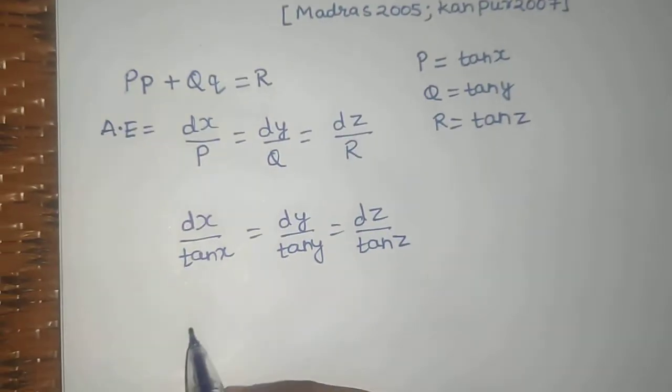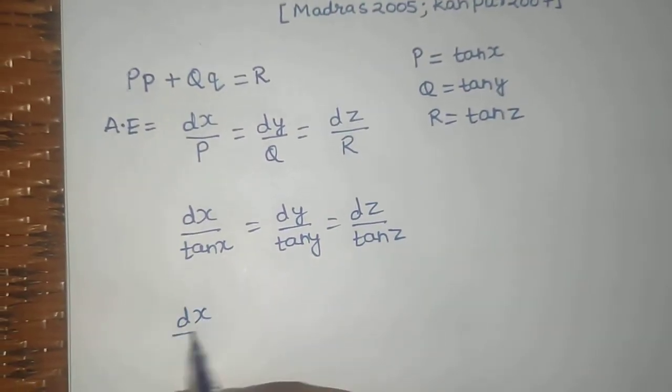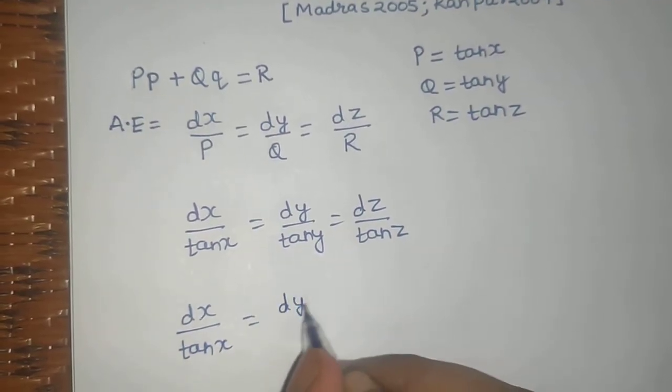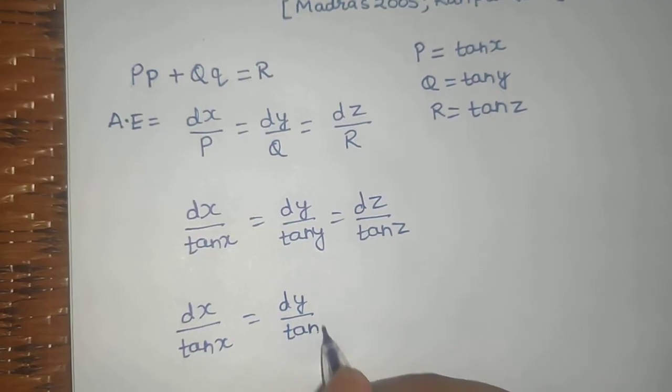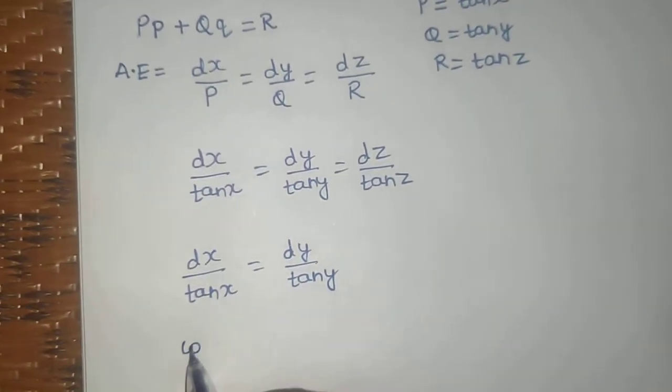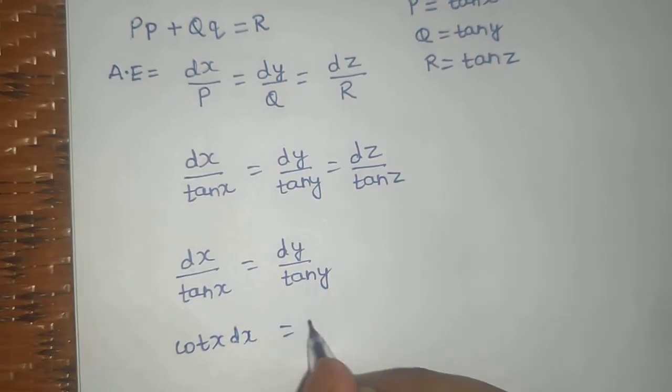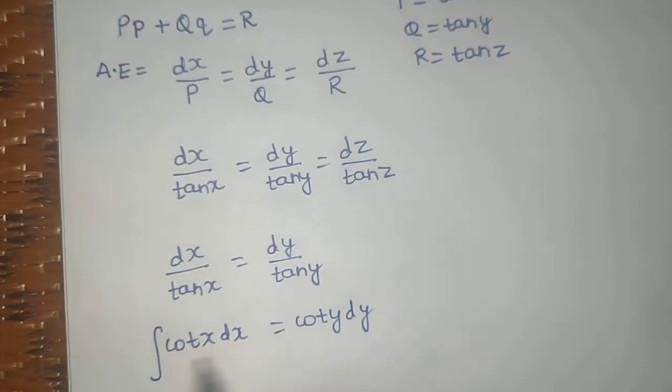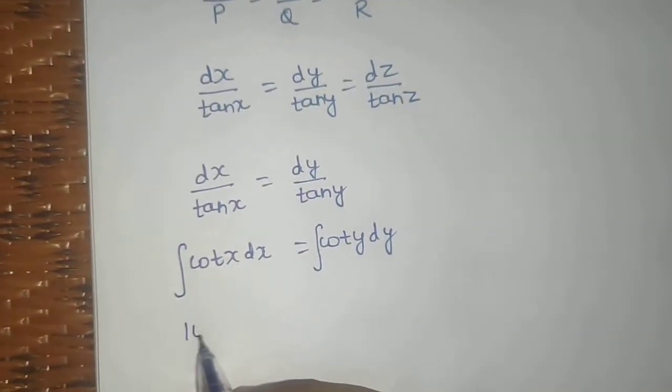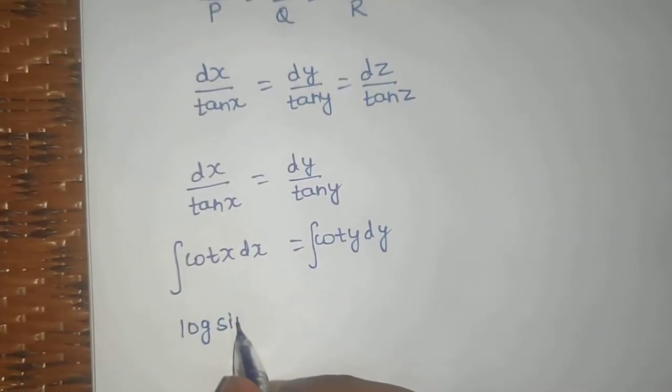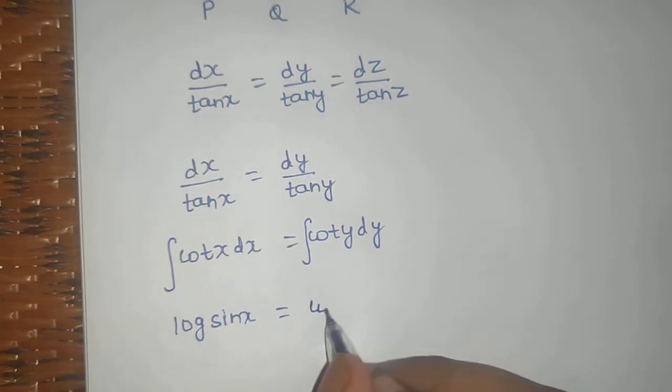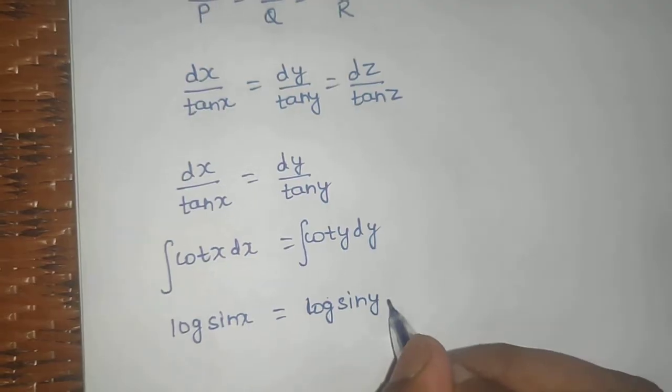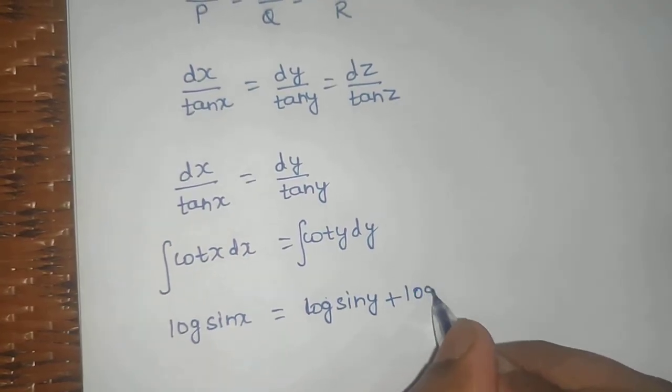Taking the first and second, equate dx by tan x equals to dy by tan y. You will get cot x dx equals to cot y dy. If you integrate both sides, the integration of cot x is log sin x, integration of cot y will be log sin y, and the constant I am letting as log c1.